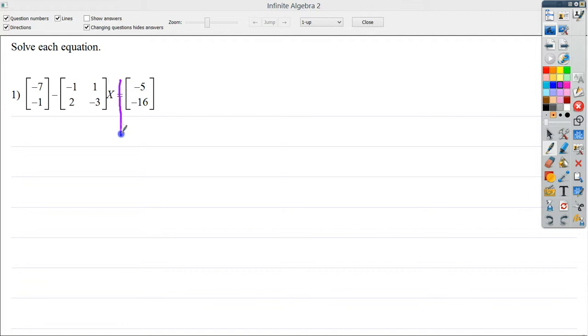But anyway, if I were to draw a line here, I do need to subtract this matrix here because it's on the outside. So I'd essentially bring this over and do the subtraction, and this would go away because I'd subtract it and cancel it. I'd do negative 5 minus negative 7, and I'd end up with positive 2. And then I'd do negative 16 minus negative 1, which would give you negative 15.